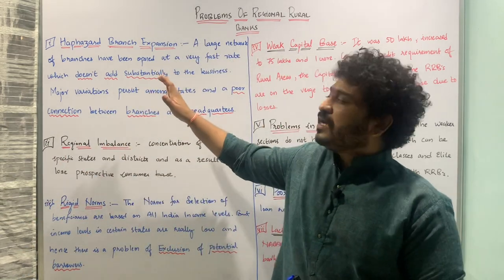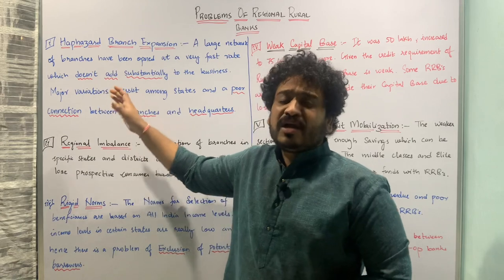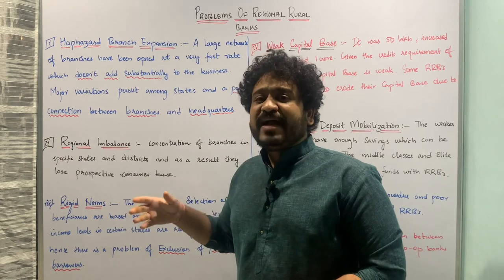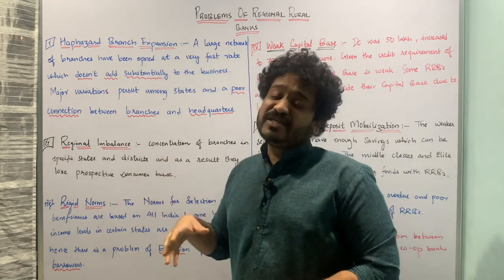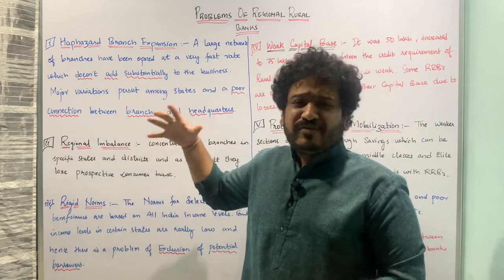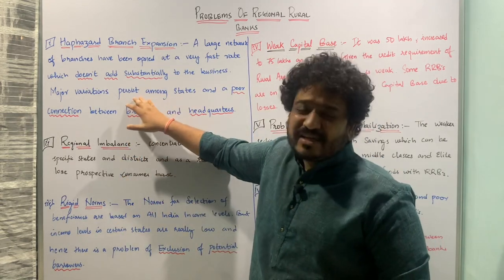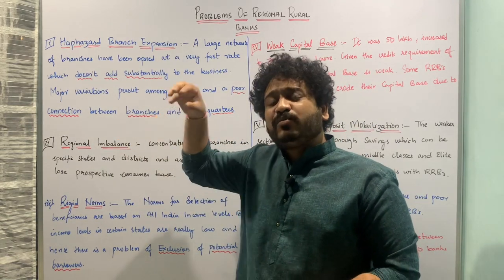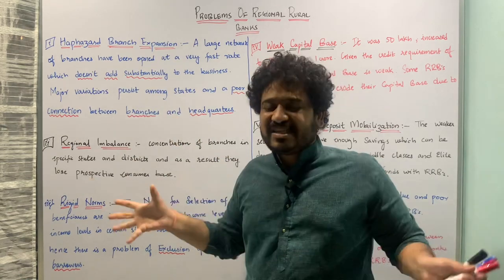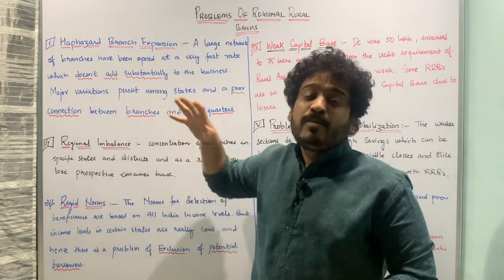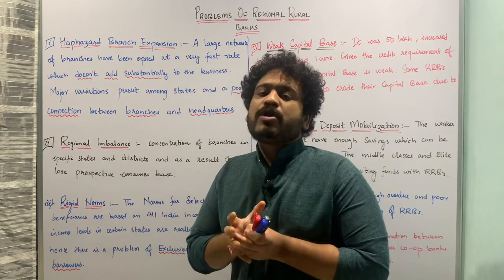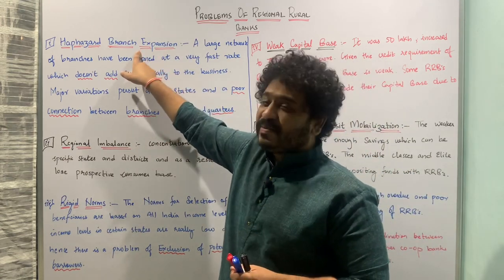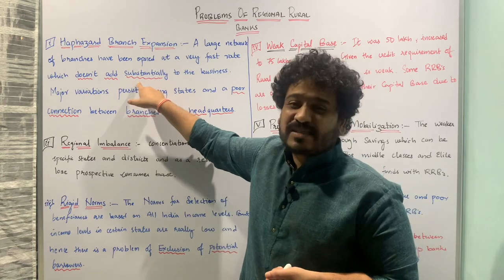The first point is haphazard branch expansion. A large number of branches were opened at a very fast rate, and as a result, these branches could not add substantially to the business of regional rural banks. Furthermore, there is variation in the presence of regional rural banks, not only within a state but also among states, resulting in poor connection between the branches and the headquarters.